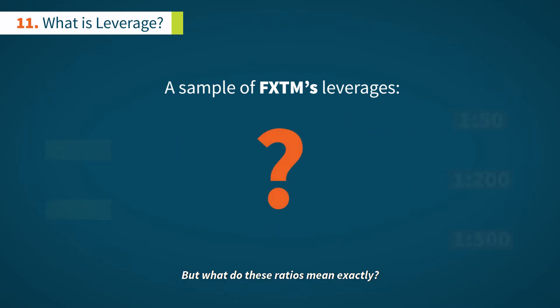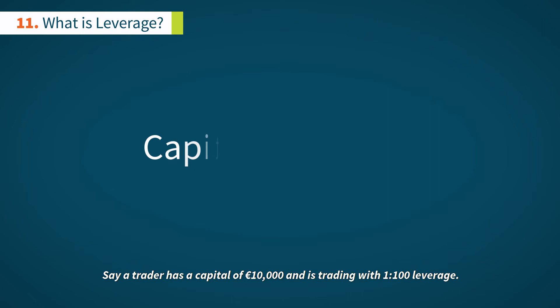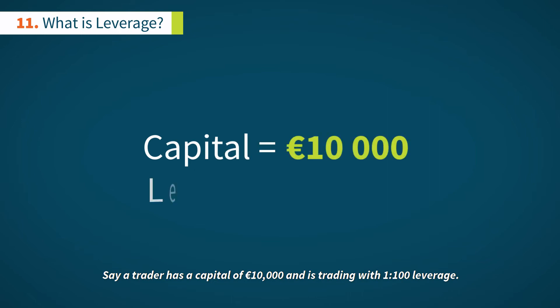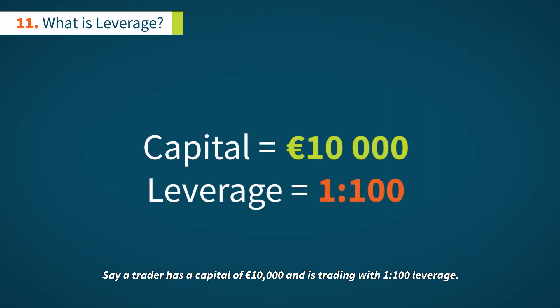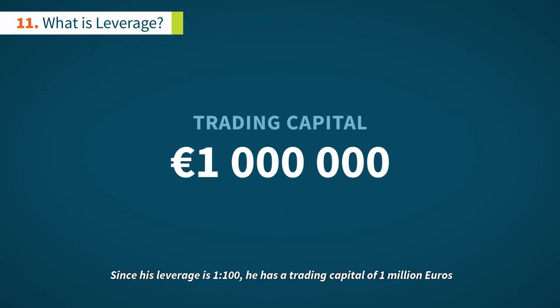But what do these ratios mean exactly? Let's look at some examples. Say a trader has a capital of 10,000 euros and is trading with 1 to 100 leverage. Since his leverage is 1 to 100, he has a trading capital of 1 million euros.